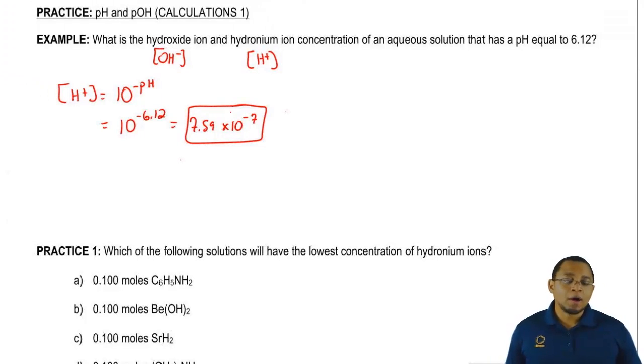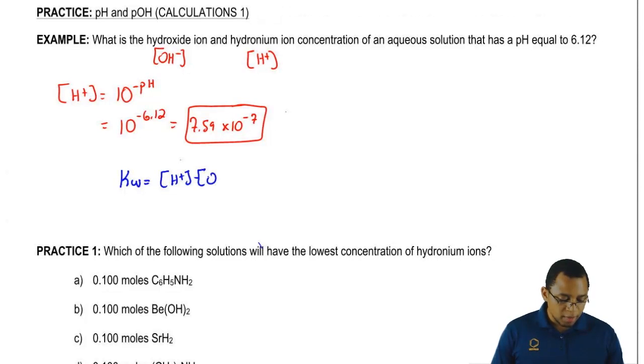We could find OH now and we can find OH in two different ways. The first way we could find OH minus is by simply using this equation: KW equals H plus times OH minus. We know what KW is. We assume the temperature is 25 degrees Celsius since they don't tell us what it is. So this would be 1.0 times 10 to the negative 14. We just found out what H plus is: 7.59 times 10 to the negative 7.